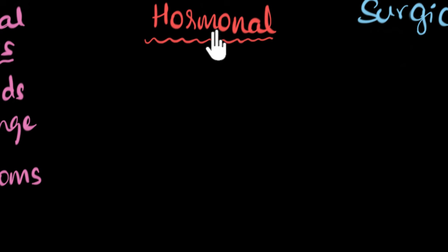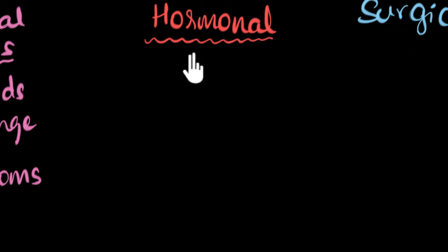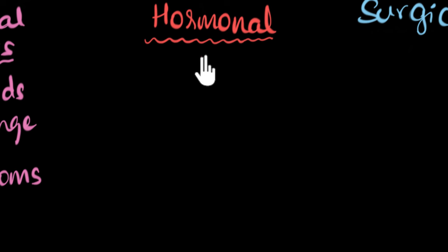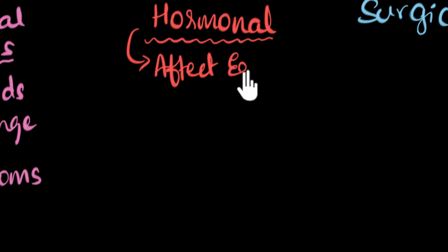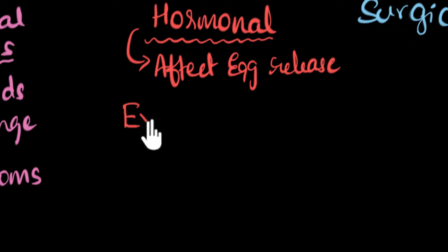As the name suggests, in the hormonal method we change the hormone levels — we cause some kind of a hormone imbalance. In the female reproductive system, it's certain hormones that cause the release of eggs. So if we change the levels of those hormones which are responsible for the release of eggs, this can affect the egg release altogether.